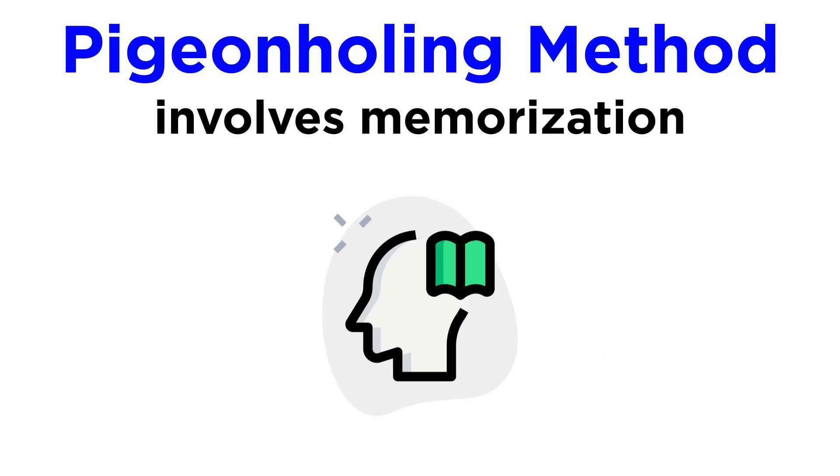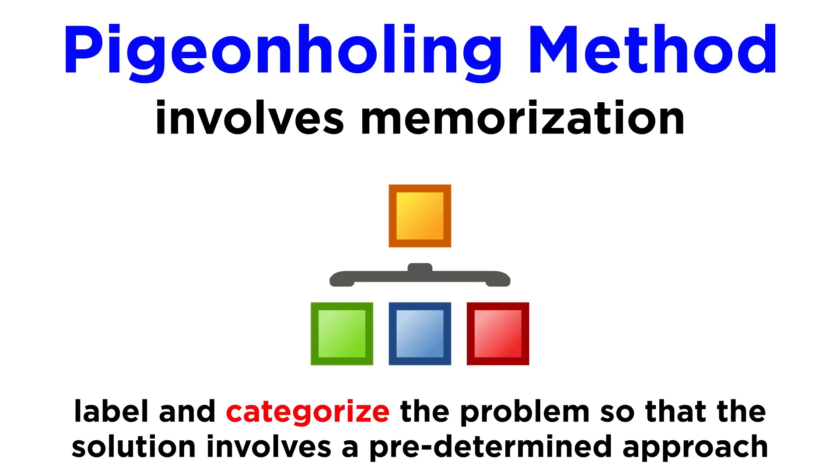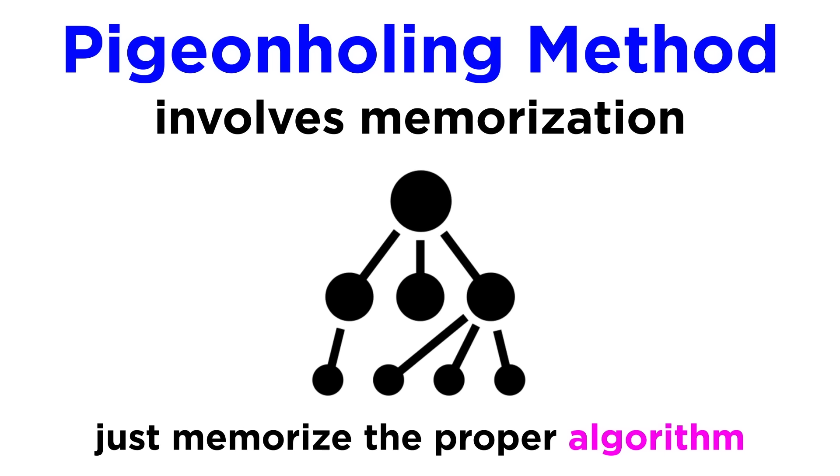One problem-solving method employs memorization and could be referred to as the pigeonholing method. When we do this, we are trying to label and categorize the problem so that the process of arriving at the solution fits some predetermined approach that we have practiced many times. This approach will involve an algorithm, or a set of steps that we can memorize and apply to any information input of the correct type. Sometimes, this can be useful.